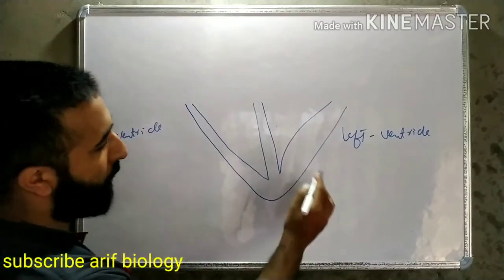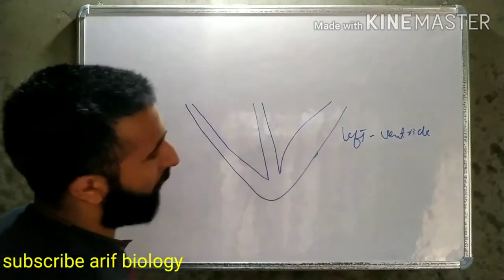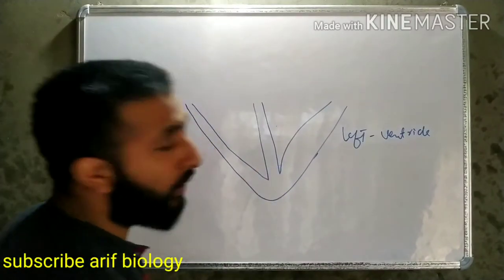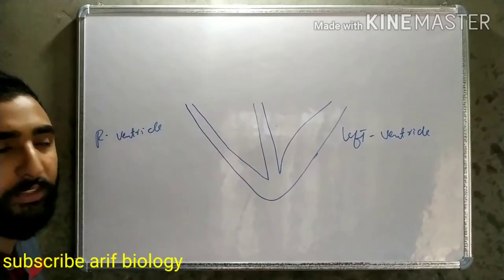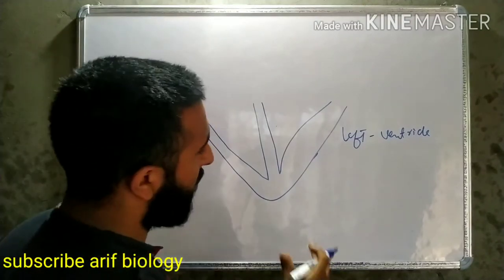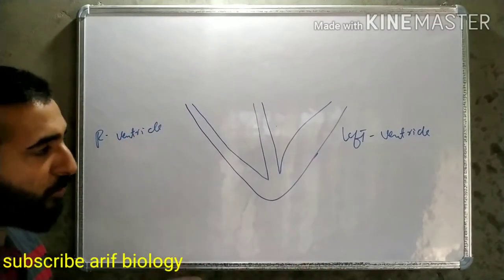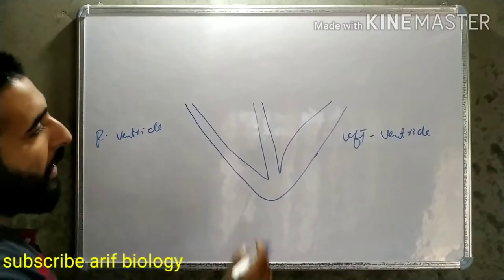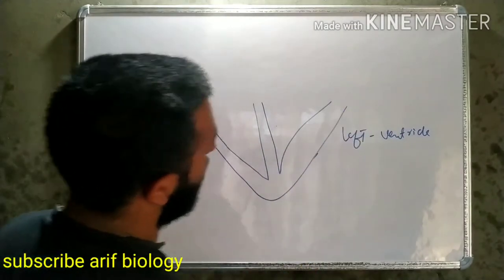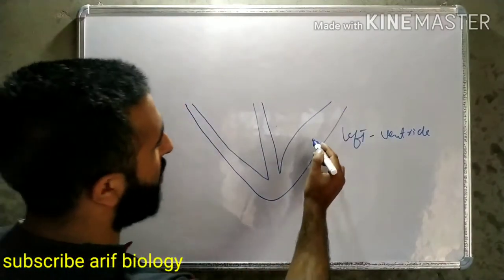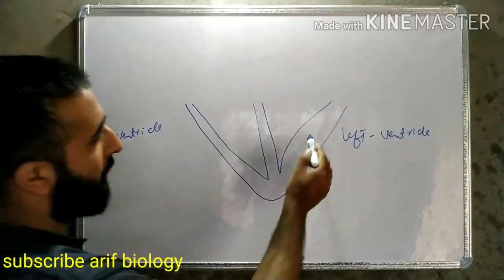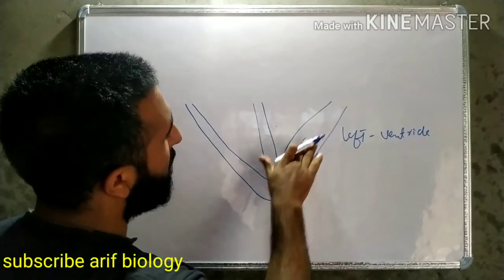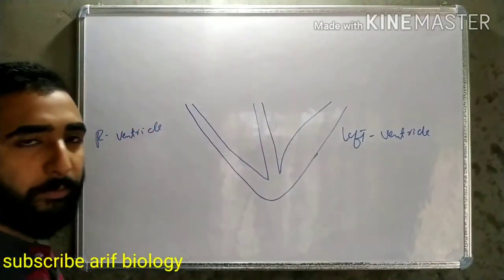Before going to the ventricles, I will tell you about the epicardium. The epicardium is made up of two layers - that is, the outer parietal and inner serous layer - and between these two layers there is cardiac fluid present. This is the myocardium, that's the middle layer, and it is made up of cardiac muscles. And this is the endocardium.